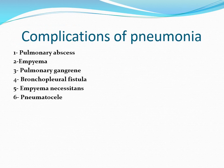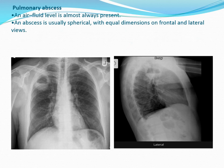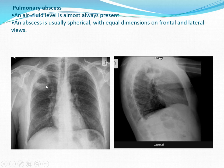Complications of pneumonia include pulmonary abscess, empyema, pulmonary gangrene, bronchopleural fistula, empyema necessitatis, and pneumatocele. Pulmonary abscess almost always presents with an air-fluid level; it is usually spherical with equal dimensions on frontal and lateral views. On chest X-ray PA and lateral views, we see a thick-walled cavitary lesion with air-fluid level of equal dimensions on frontal and lateral views.